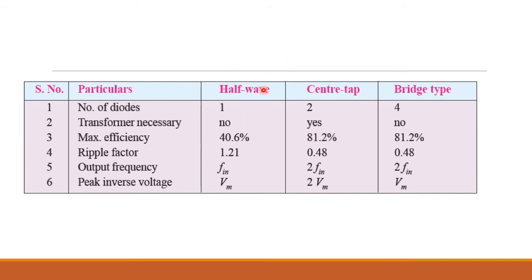Here are the important values to remember. For a half-wave rectifier, we need one diode; for center tap, two diodes; for bridge type, four diodes. For the transformer: half-wave uses no center tap transformer; center tap uses a center tap transformer; bridge type uses no center tap transformer. Maximum efficiency: half-wave is 40.6%, center tap is 81.2%, and bridge type is 81.2%. Ripple factor: half-wave is 1.21, center tap is 0.48, and bridge type is 0.48. Output frequency: center tap is 2×F_in and bridge type is 2×F_in. Peak inverse voltage: half-wave is V_m, center tap is 2V_m, and bridge type is V_m.